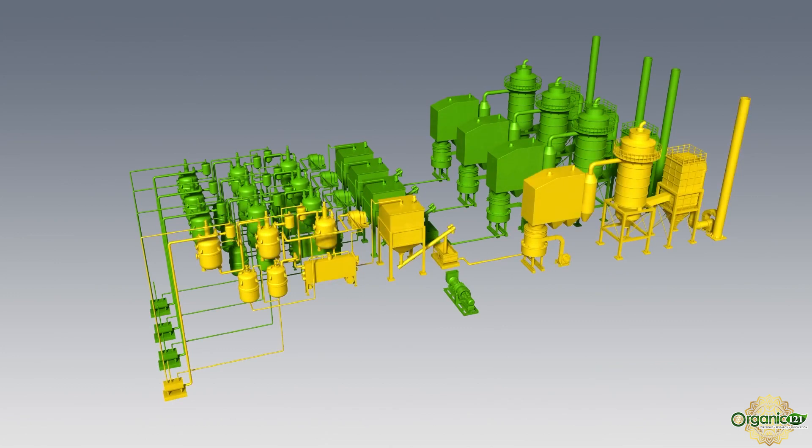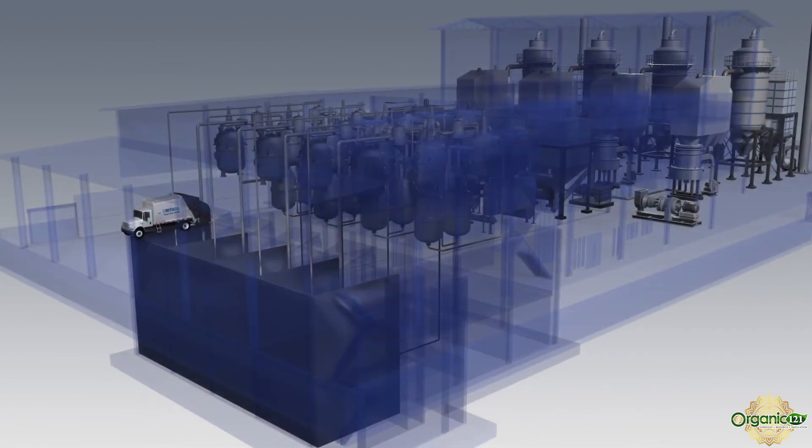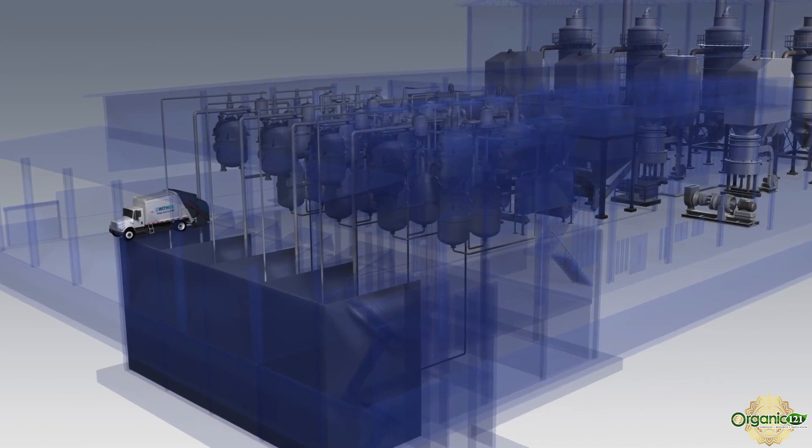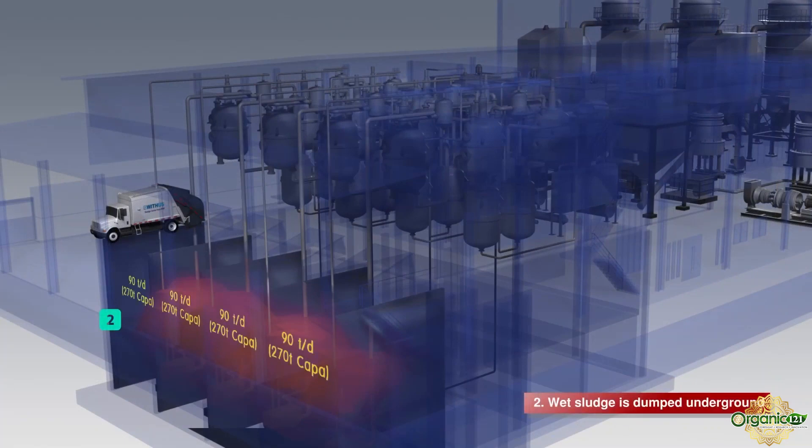There are three duty and one standby trains in the facility. Each train is identical and has its own independent process. As an overview, each train has the capacity to handle 90 to 100 tons per day, total of 360 to 400 tons per day for four trains.